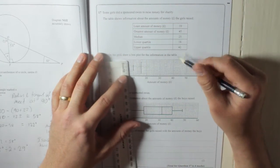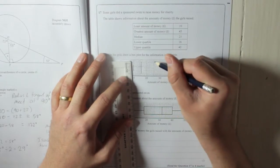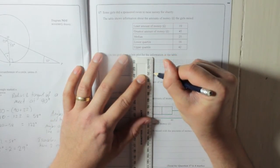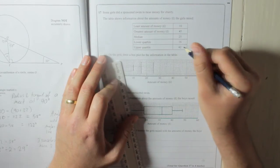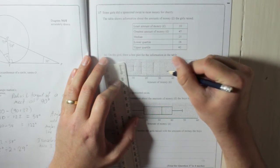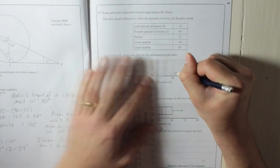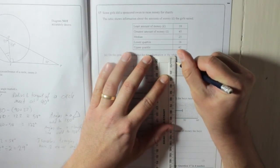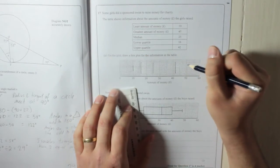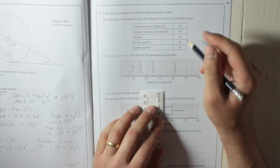Okay, the median then is 25, which is there. Then you've got the upper quartile at 42. And then the greatest amount, which was 45.